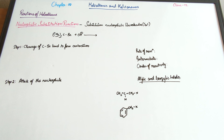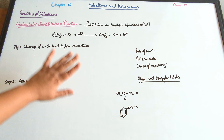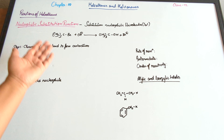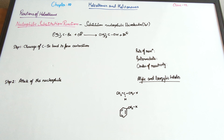Here we have an example: tertiary butyl bromide on reaction with the OH⁻ ion is going to give us an alcohol, which is (CH₃)₃COH — tertiary butyl alcohol or 2-methylpropan-2-ol — plus Br⁻. The OH⁻ is not going to come and attack the carbon atom from the back because of the presence of three methyl groups attached to it; it is very difficult to have the space to attack from the back.